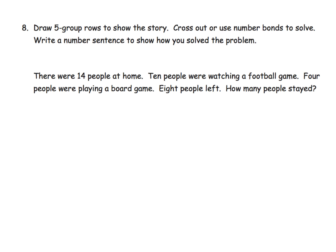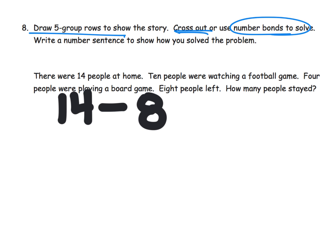And the last slide for this video. We get a choice. First thing we're going to do is we're going to draw the picture. But then we get to cross out or use number bonds to solve this problem. So there were 14 people at home, and 10 people were watching a football game, 4 people were playing a board game, 8 people left. How many people stayed? So let's start by writing the number sentence. It's 14 minus 8. So there's our number sentence. And we're going to draw the problem. So there are our dots.